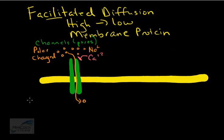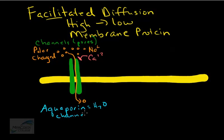One important example of a channel with great biological significance is the class of channels referred to as aquaporins — water channels. Aquaporins are particularly abundant in the membranes of cells that need to move a lot of water quickly. Since movement of water through the bilayer is relatively slow, cells that need to move water quickly have aquaporin channels that specifically allow the movement of water under osmotic gradients to pass in or out of the cell.